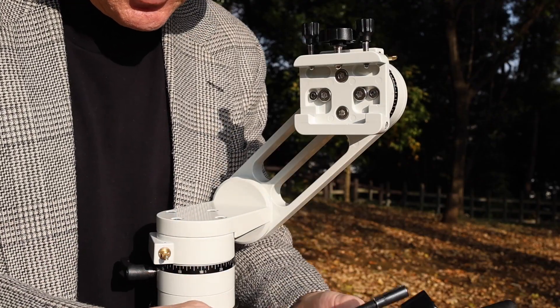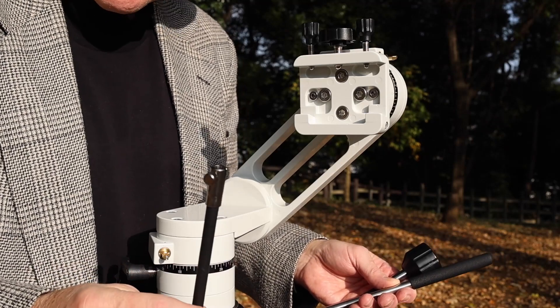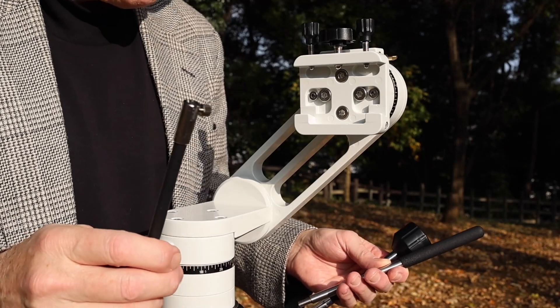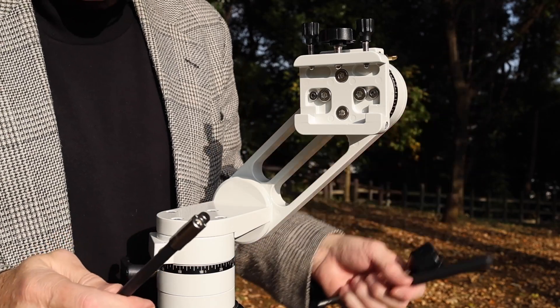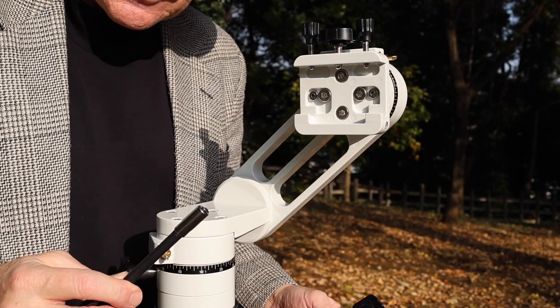Next we're going to need to attach a few accessories here, like these slow motion movement knobs that are for the azimuth and the altitude. Actually, there was a lot of thought put into the design of these.